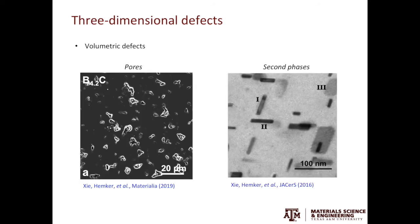Moving from two dimensions to three dimensions, we have the volumetric defects. In 3D, we can take away material, and that leaves us pores. All the features you see here are pores in the boron carbide sample. We can also put foreign atoms in the material, and these foreign atoms will segregate to form second phases. The platelets you see in the second micrograph are nanoprecipitates in the boron carbide sample. The presence of precipitates can also interact with the free movement of dislocations, leading to strengthening.